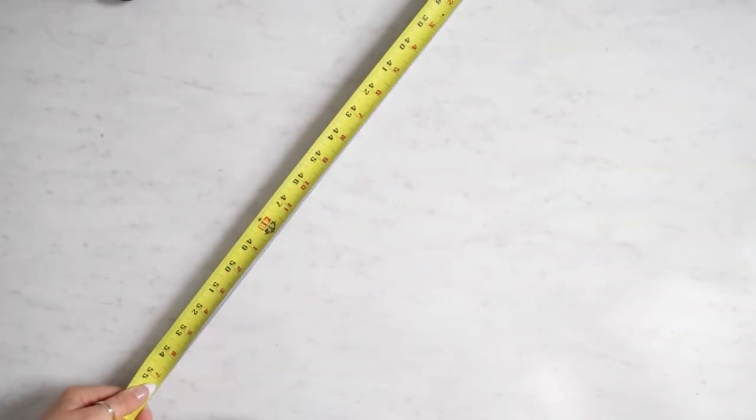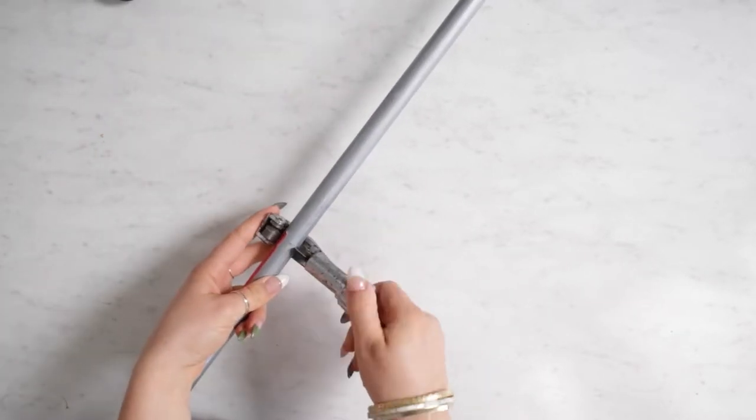Then you're going to mark this measurement on your metal conduit. Then just use a pipe cutter to cut at this mark.